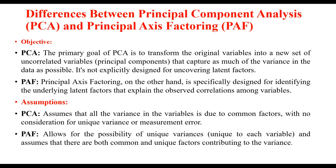Principal Axis Factoring, on the other hand, is specifically designed for identifying the underlying latent factors that explain the observed correlations among variables. Regarding assumptions: PCA assumes that all the variance in the variable is due to common factors, with no consideration for unique variance or measurement error. Principal Axis Factoring, however, allows for the possibility of unique variance specific to each variable and assumes that both common and unique factors contribute to the variance.